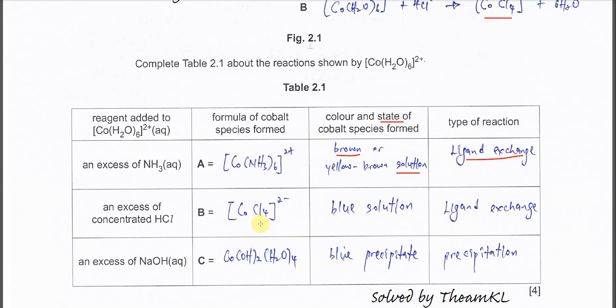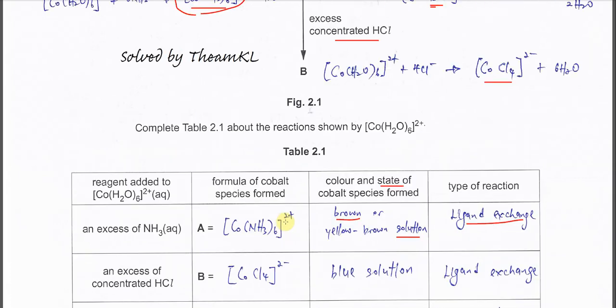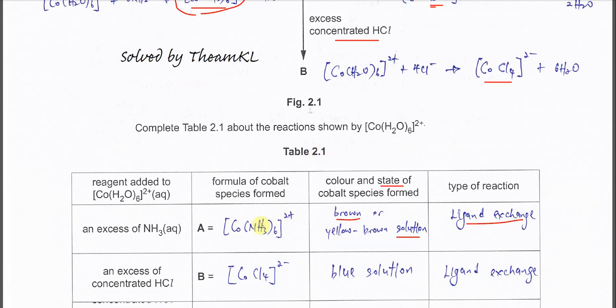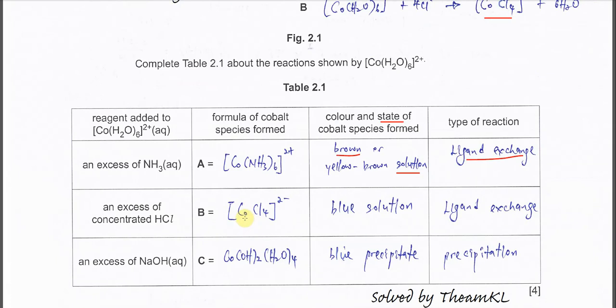And for B is the addition of this concentrated HCl in excess. So we will form this, CoCl42-. And this is the blue solution. Also type of reaction is ligand exchange. All the H2O exchange with this chloride. So four chloride get in there and form this complex ion.